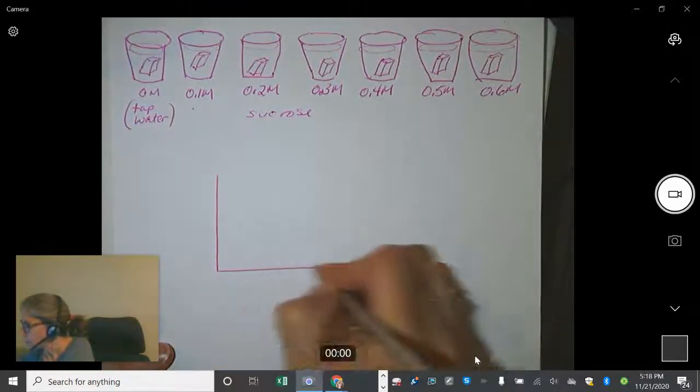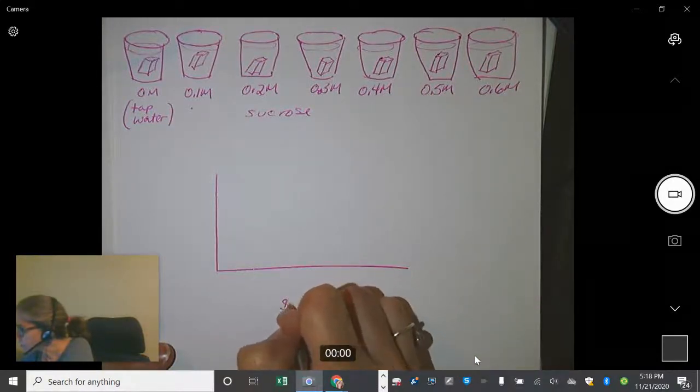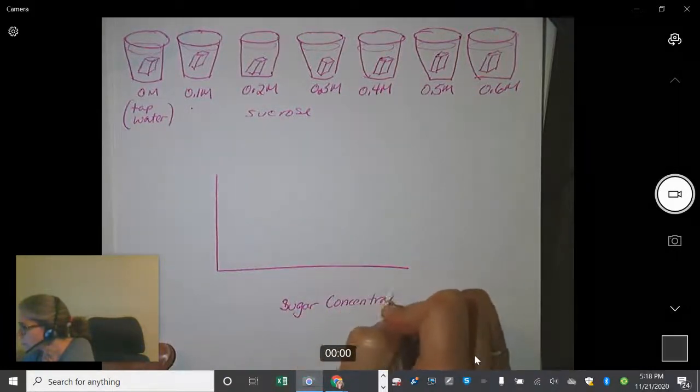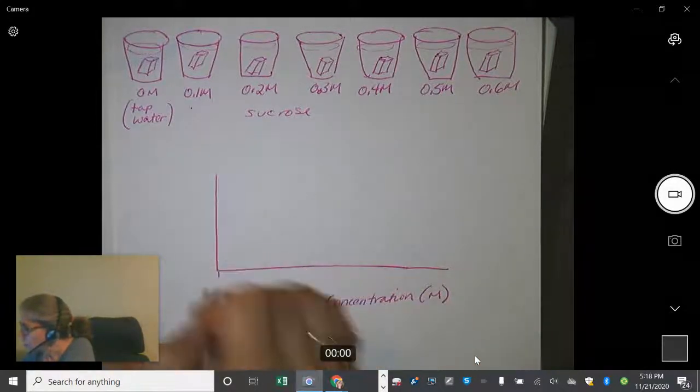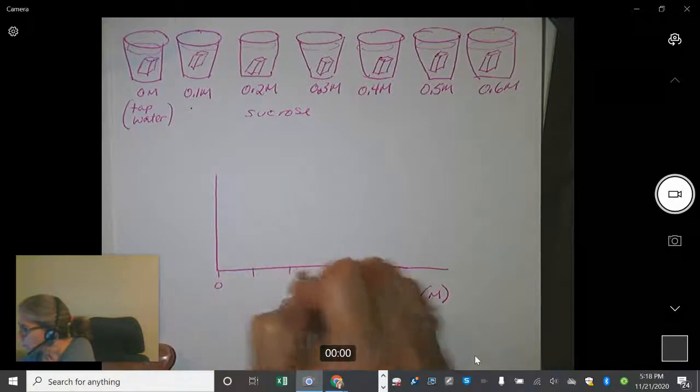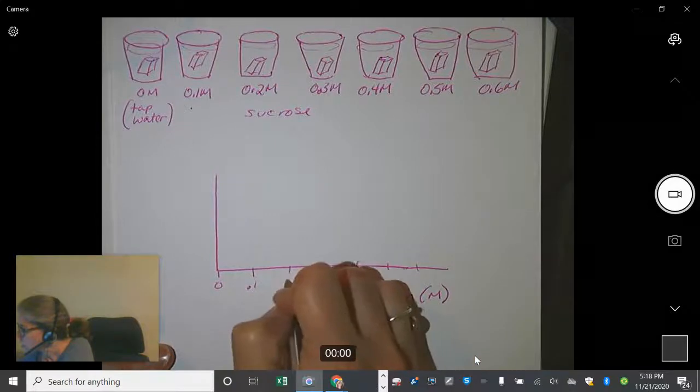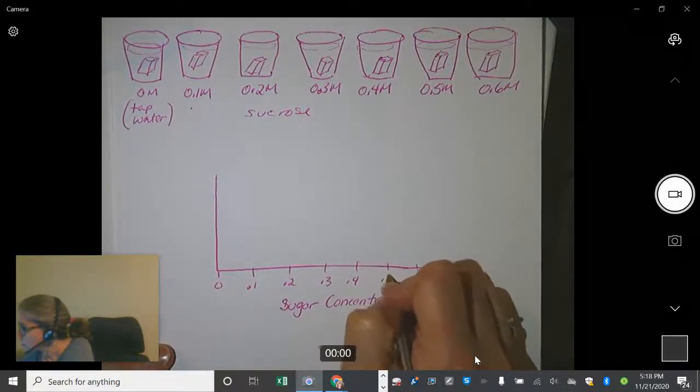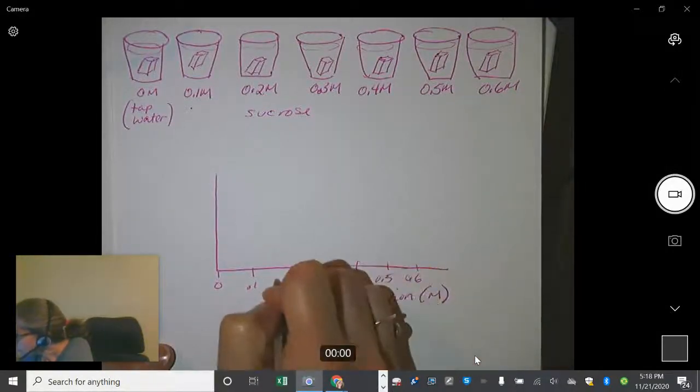And then we calculated the percent difference. So here's what we actually found - this was the molarity of the sugar, so I guess we'll put sugar concentration maybe, and the units are going to be moles per liter: 0.1, 0.2, 0.3, 0.4, 0.5, 0.6.